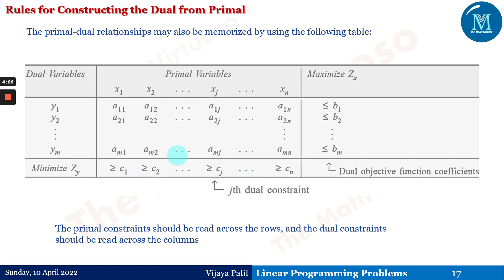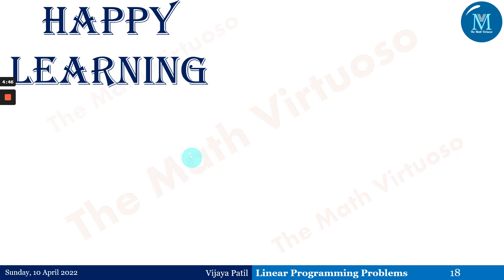Primal constraints should be read across the rows, and dual constraints should be read across the columns. You can remember this table to understand the concept of duality and the primal-dual relationship in detail. This is all about constructing the dual from the primal and the rules for doing so. Thank you so much — happy learning!